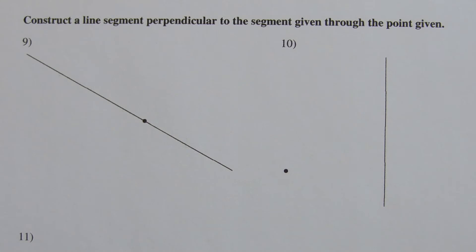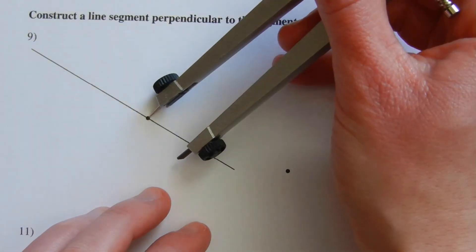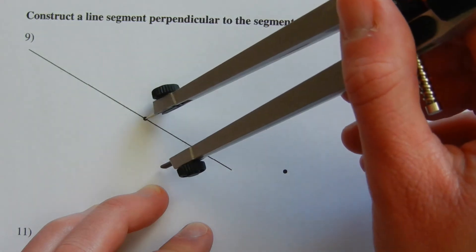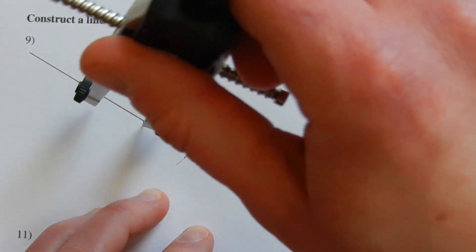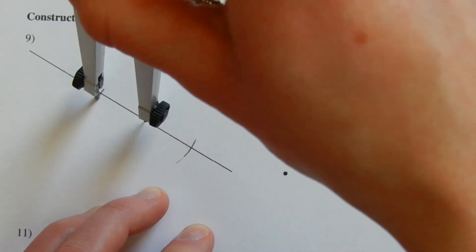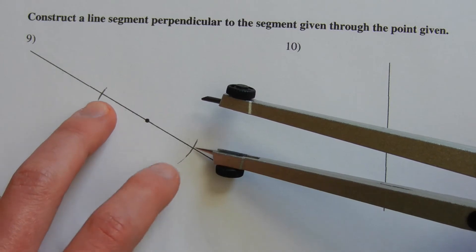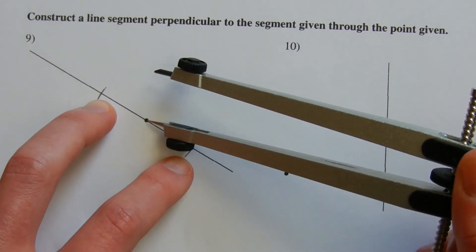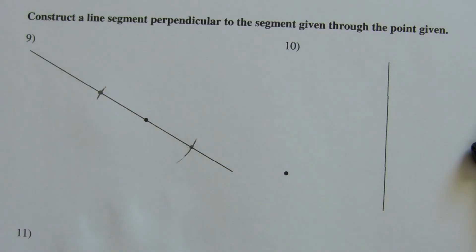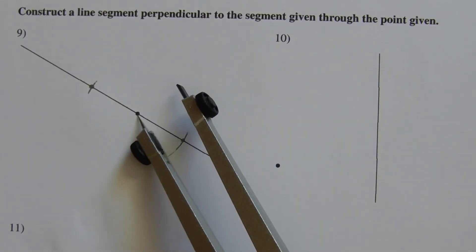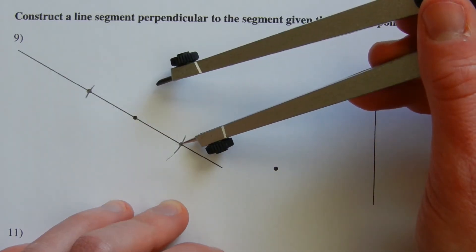On the third page, we construct a line segment perpendicular to the given segment through a given point. For number nine, the point is on the line segment. We take our compass, put it on the given point, set it slightly away, make a mark on one side of the line, then go to the other side without changing the compass measure and make the same mark. Now we have two points equidistant from our given point — so the given point is essentially the midpoint of our new segment. Then we make the perpendicular bisector of that new segment.